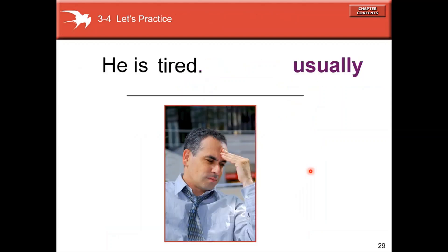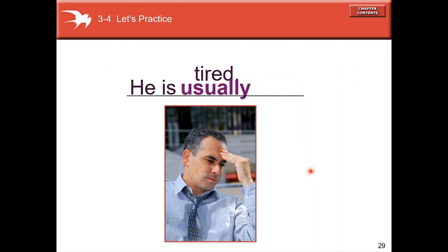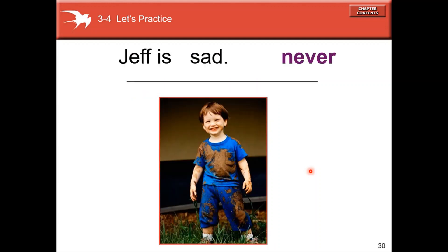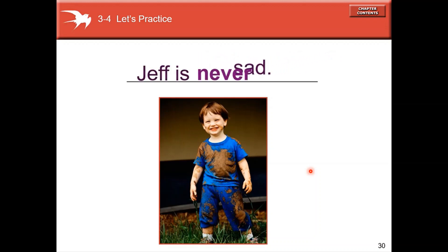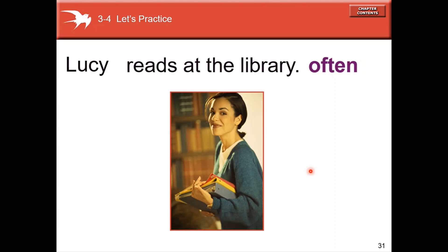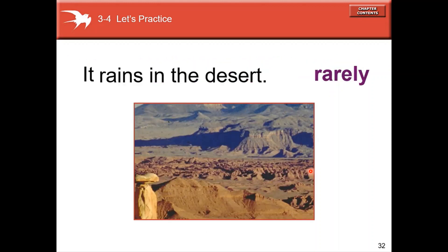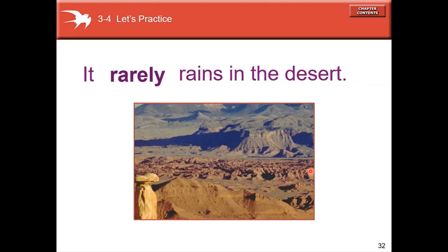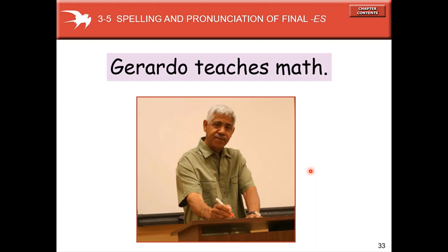'He is tired' — where do you put 'usually'? Correct: 'He is usually tired.' 'Jeff is sad' — where do you put 'never'? Correct: 'Jeff is never sad.' Now, what if it rarely rains in the desert? And Gerardo teaches math — now we're going to learn how to add -s or -es to verbs.